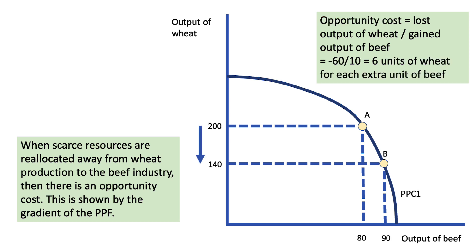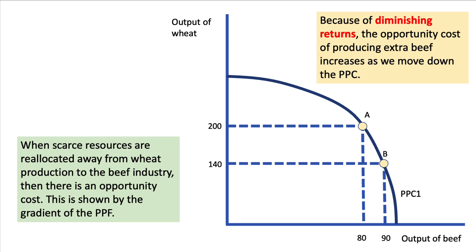You could always use it numerically. For example, it might be the case that producing an extra 10 units of beef requires sacrificing 60 units of wheat, giving an opportunity cost of 6. Because of diminishing returns, as we move down that curve from A to B, and maybe to a point further along the curve, the opportunity cost of producing extra beef is going up. We're getting a little extra beef, but we're having to sacrifice more wheat in exchange.